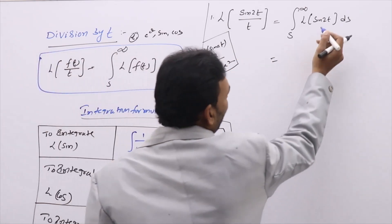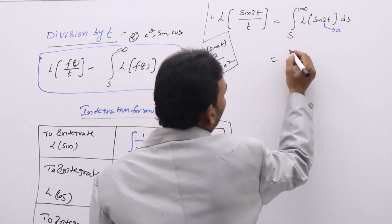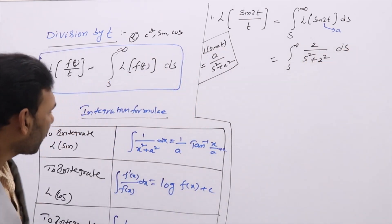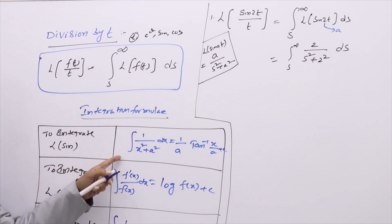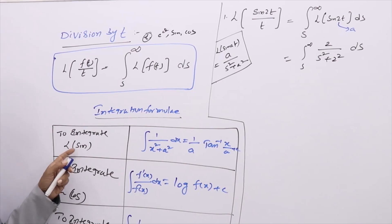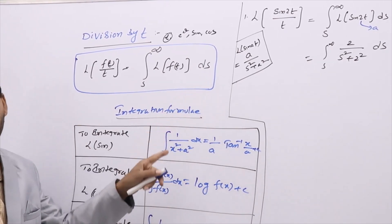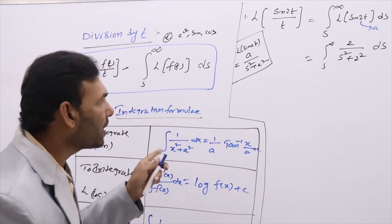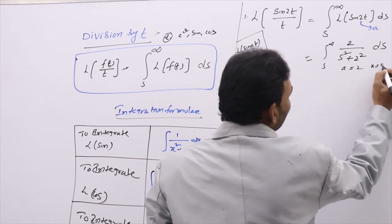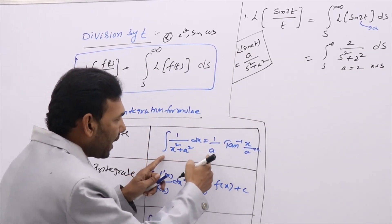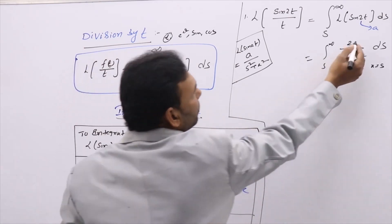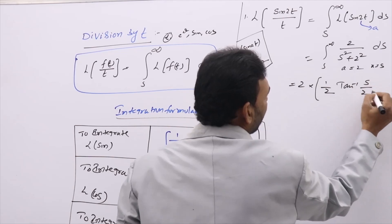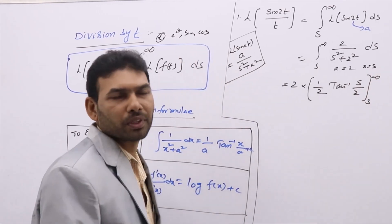You know that L{sin(at)} = a/(s² + a²). Here a = 2, so you get: integral from s to infinity of 2/(s² + 4) ds. Now recall the integration formula we are going to use to integrate Laplace sine: integral of 1/(x² + a²) dx = (1/a) tan⁻¹(x/a). Here a = 2, and in place of x we write s. So this becomes (1/2) tan⁻¹(s/2), evaluated from s to infinity. The 2s cancel.